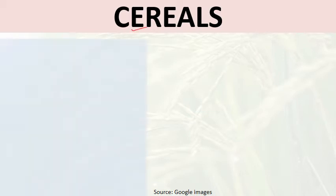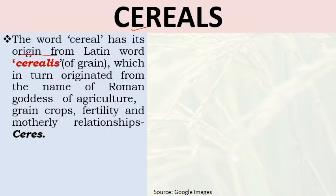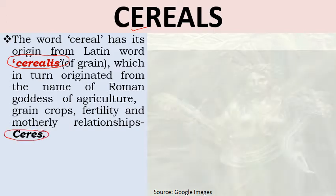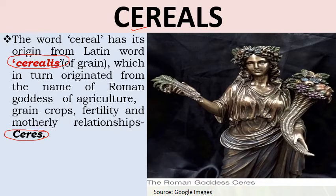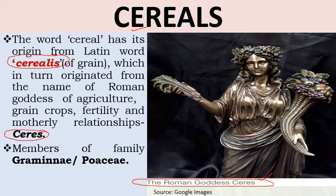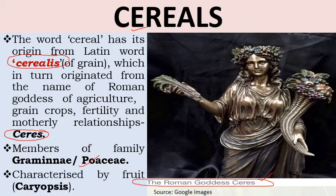As we have discussed in a previous lecture, the word 'cereal' is derived from the Latin word 'serialis,' which in turn originated from the name of the Roman goddess of agriculture, grain crops, fertility, and motherly relationships — Ceres. Rice is a member of the family Poaceae, commonly known as the grass family, and is characterized by the fruit caryopsis.